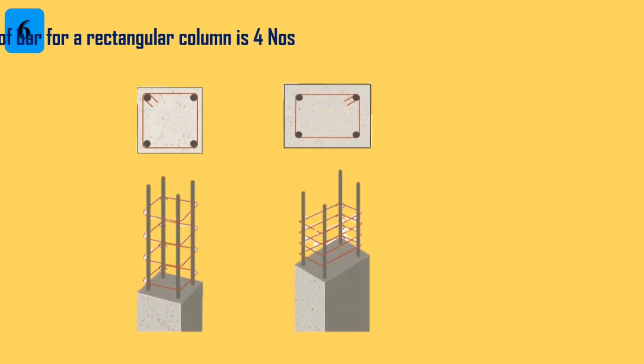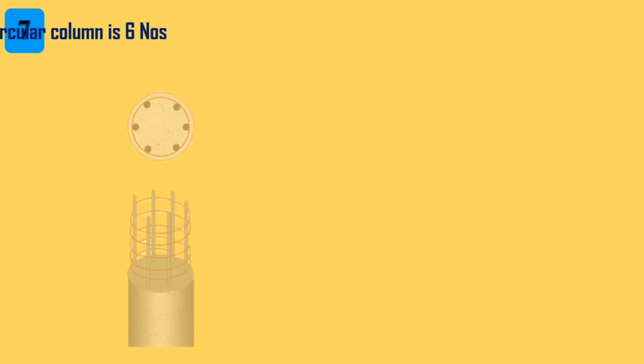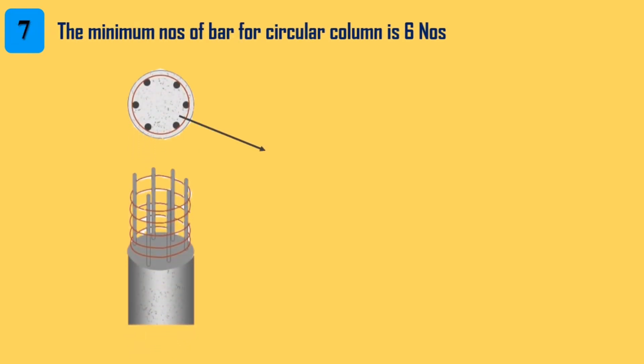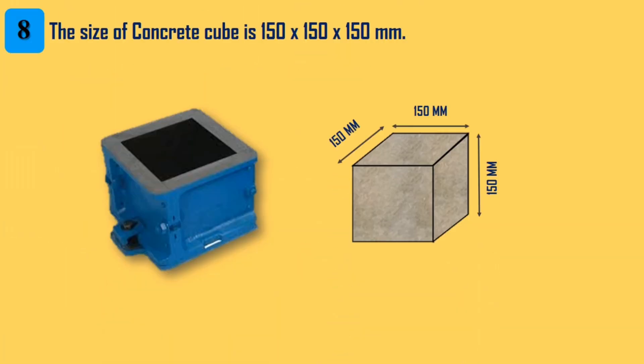6. The minimum number of bars for a rectangular column is 4. 7. The minimum number of bars for a circular column is 6. 8. The size of a concrete cube is 150 x 150 mm.